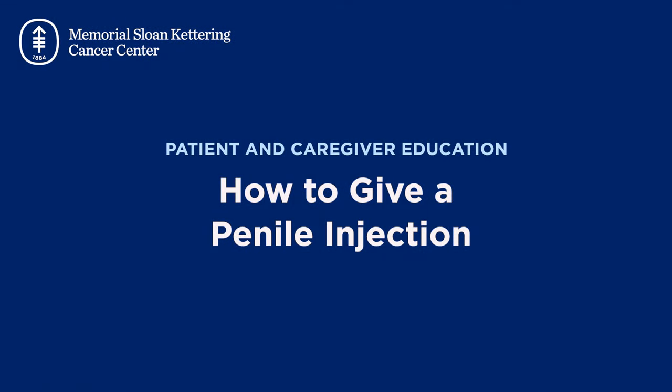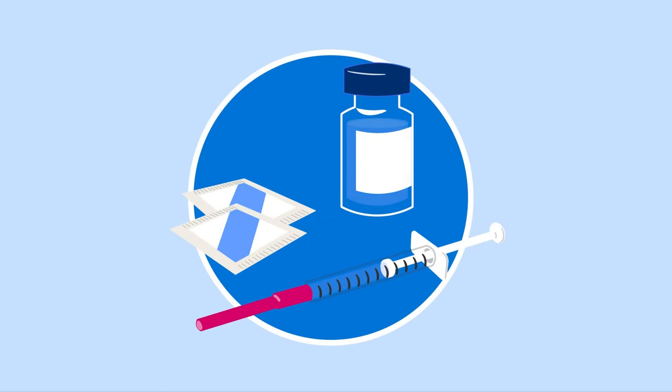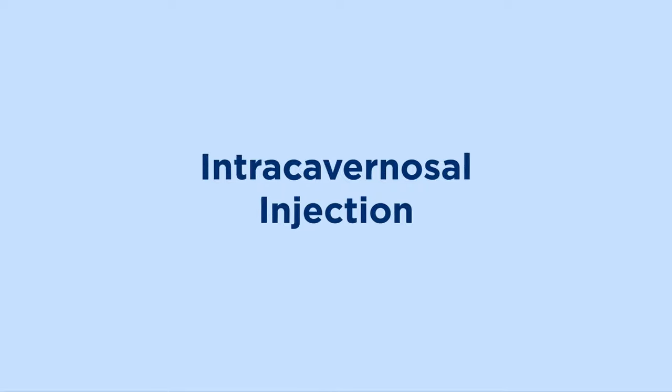In this video, we'll show how to give a penile injection. A penile injection is a shot of medication in your penis. It's also called an intracavernosal injection, or ICI.